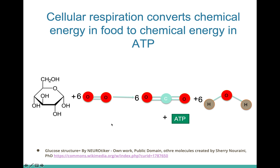What you're looking at here is the summary reaction for cellular respiration: C6H12O6 plus 6O2 gives us 6CO2 and 6H2O. During this process — shown as one reaction but actually a series of reactions, a pathway — it produces ATP.